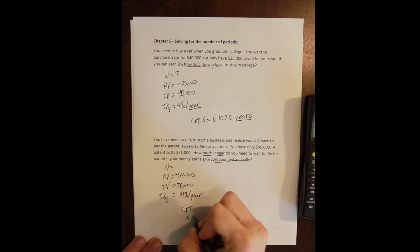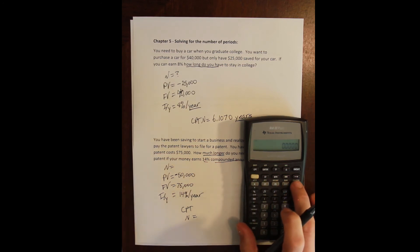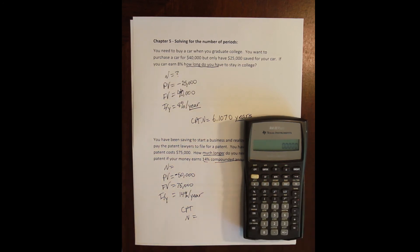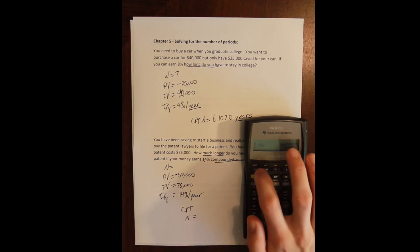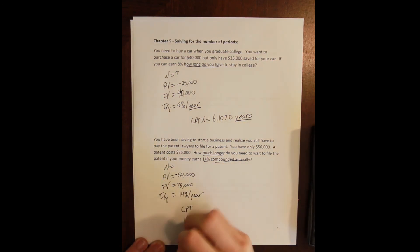Now we need to compute the n. How long do we need to stay in this investment? So I'll clear out, I will clear my time value of money with second and future value. Then we'll plug everything in. $50,000 is my cash outflow. That's how much I'm starting my new investment with. So negative 50 is my present value. $75,000 is what I want at the end of the account. That's how much I need to file for this patent. So that's my future value. And I'm going to earn 14% per year in this investment. So I compute my n and I get 3.0945 years.